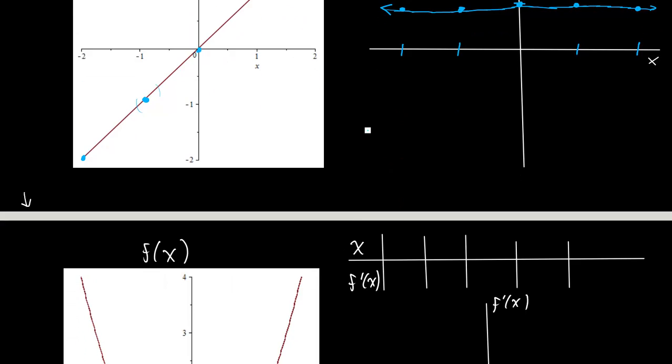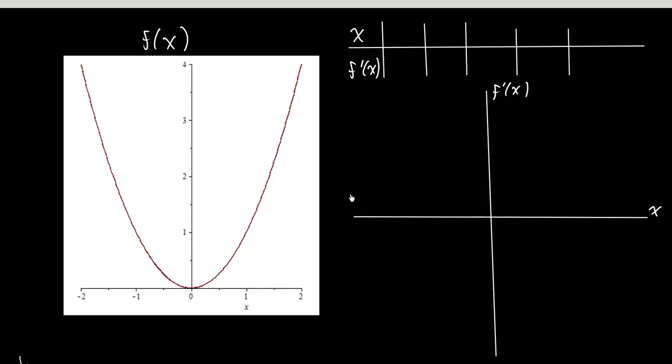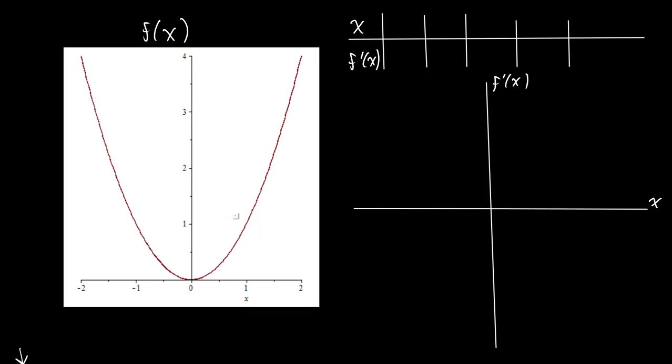So let's think about a slightly more complicated example. This is actually going to be x squared here. So let's do the same thing we did before. Let's take a bunch of different points and see what the slope is at each of those points to get an idea for what the graph of the derivative will look like.